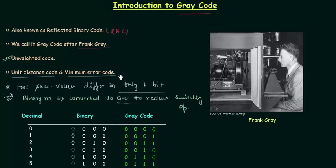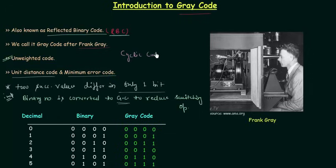So there are many names for gray code. The first one is reflected binary code (RBC), the second one is unit distance code, the third one is minimum error code, and the fourth one is cyclic code. Don't confuse yourself with these names — they all stand for gray code.